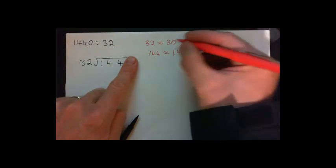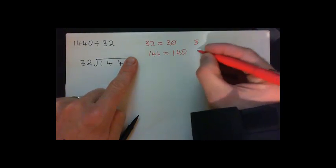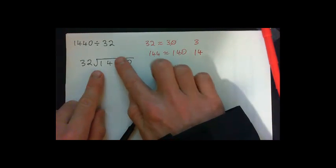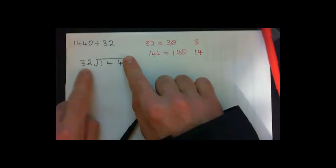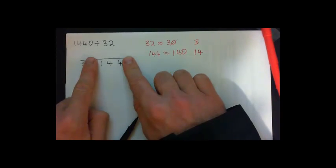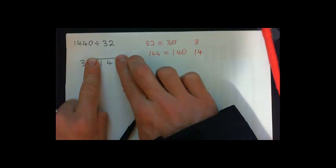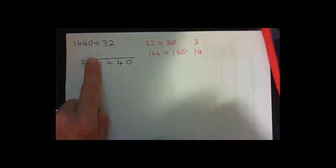Or even, it's like saying 3 goes into 14 how many times. So one trick is to just go like this. So it's 32 into 144. But let's think, what's 3 into 14? How many times does that go? That's the trick. 3 into 14 goes how many times? 3 into 14 goes almost 5 times, about 4 times. So we're going to guess 4.